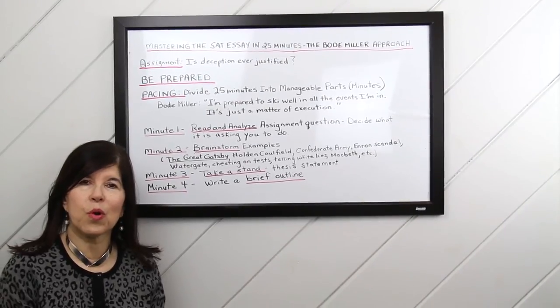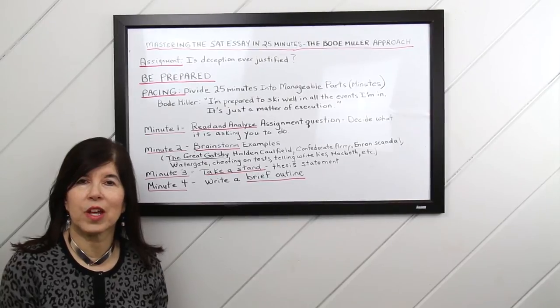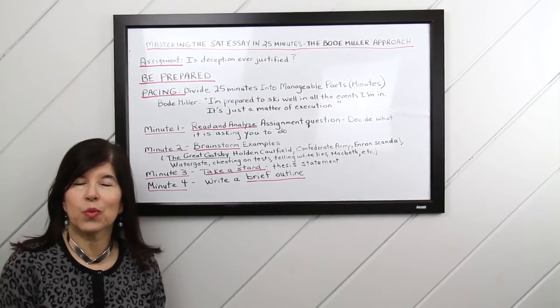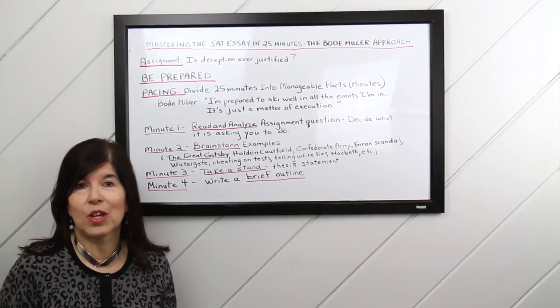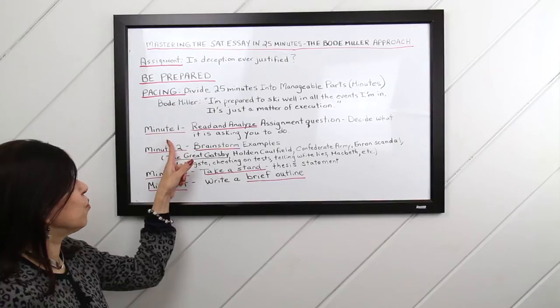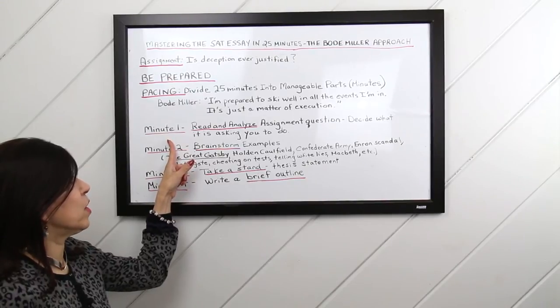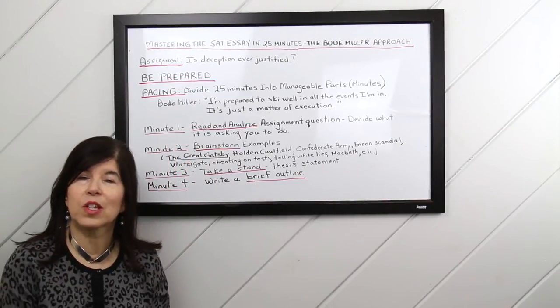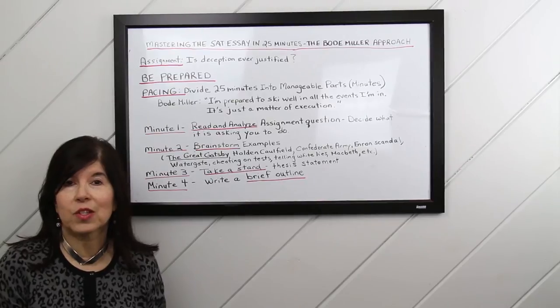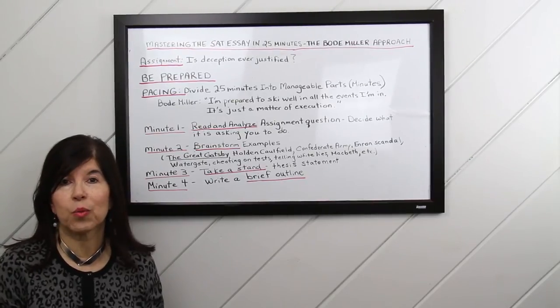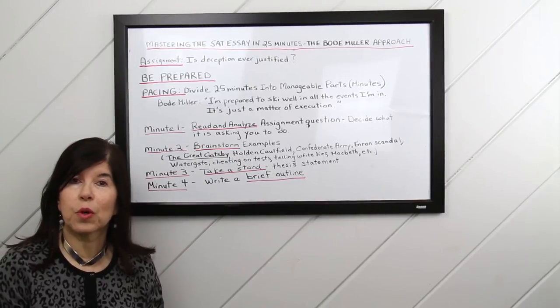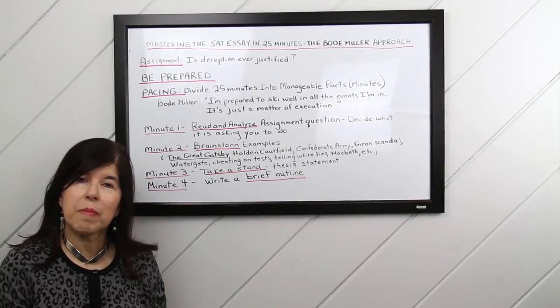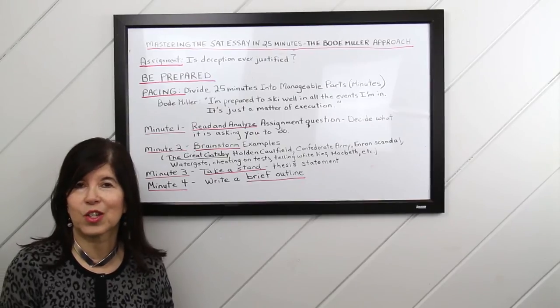So minutes one through four is basically the pre-writing stage. And none of these minutes are written in stone. If you take a little shorter on one, you can add a little time to the other. So minute one is to read and analyze the assignment question and decide what it's asking you to do. Is it asking you to take a stand? Is it asking for reasons, for an opinion? Is it asking you to argue for or against something? And pay attention to key words that might trigger a reaction.